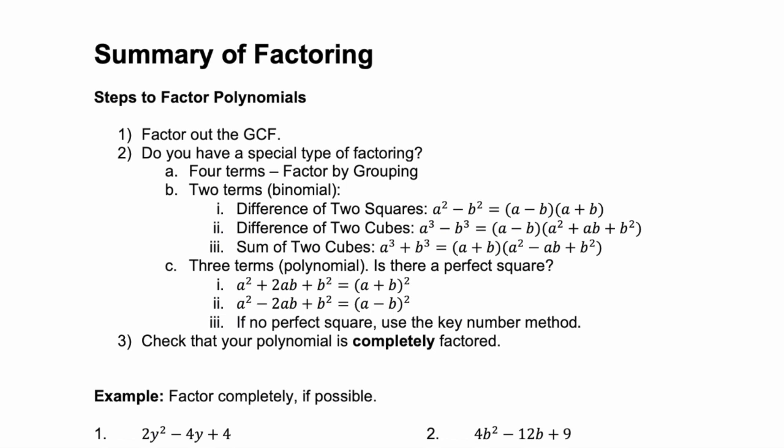Remember, step one is to always factor out the GCF. This is probably the most important step. Factor out the greatest common factor from your polynomial and then move on to step two.